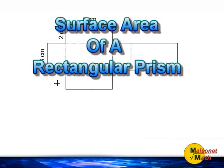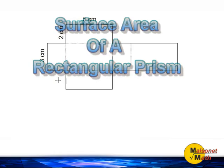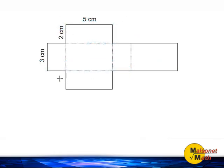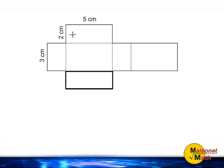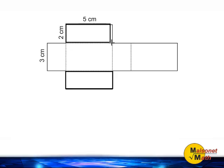Before calculating the surface area of this rectangular prism, let's identify the faces that are congruent to each other. If you take a look at this rectangle right here and this rectangle right here, we can clearly see that they are the same size. In math we say that things with the same shape and the same size are congruent to each other.